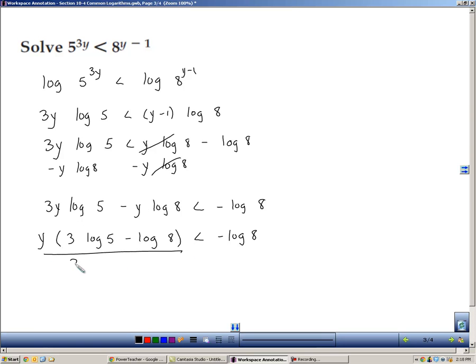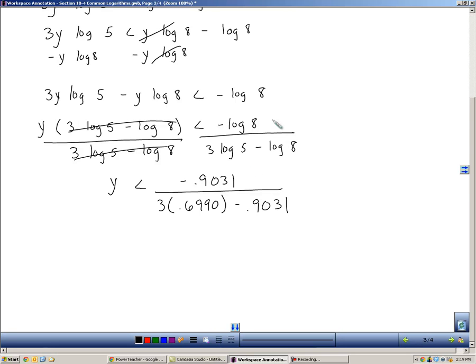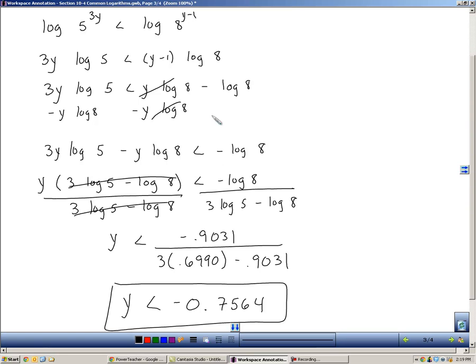And now I can divide both sides by this expression, which is nothing more than decimal numbers. And so those will cancel, isolating the y for me. So now I just use my calculator and I plug in log 8, 3 times log of 5, and log of 8. I get decimal numbers. And then again plug that whole thing into my calculator and I find out that y is less than negative 0.7564. And so you notice that by using the different properties, what I'm really doing is trying to break apart all the pieces so I can get the variable by itself. And then these logs, these common logs are nothing more than decimal numbers that at the very end I just plug them in and I can approximate my solution.